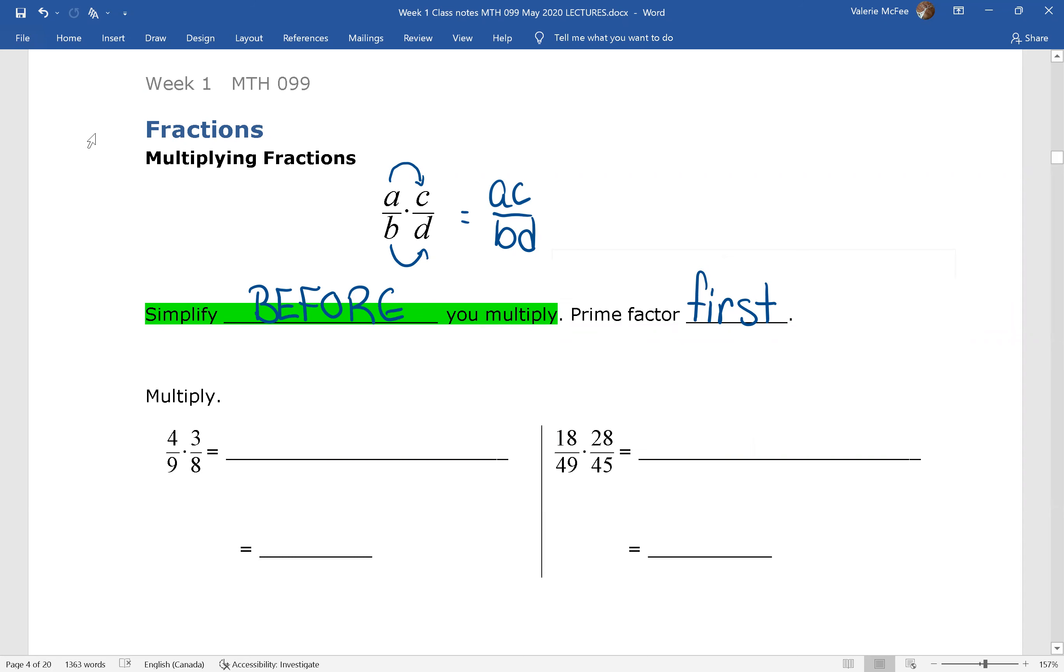So let's look at that idea of prime factoring first. Our first fraction here is four over nine. Four is two times two. Nine is three times three. And then we have three over eight. Well, three is already prime. So there's our fractions factored. Now we can divide out those common factors. Three is common. This two divides out. This two divides out. In the numerator, we're left with one. The denominator, six.